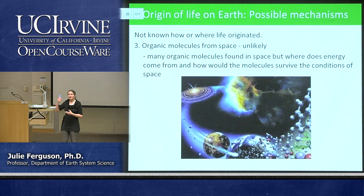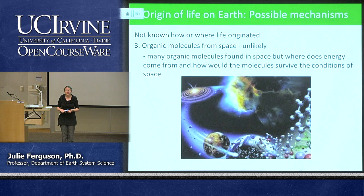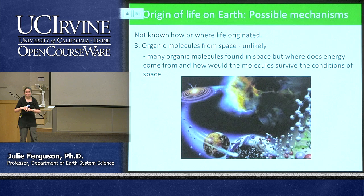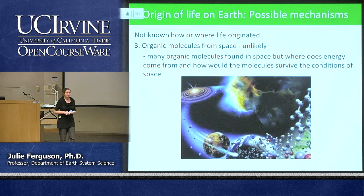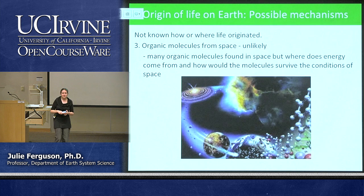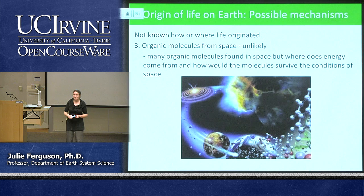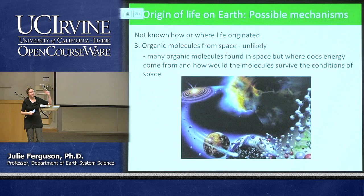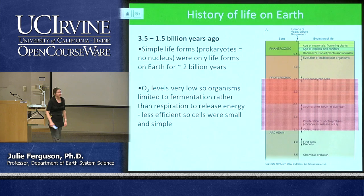The last idea is a bit out there — panspermia. When we look at gas clouds in space, we can see quite complicated organic molecules out there, so the idea is that life is seeded to different planets from space. But there are real issues: complex organic molecules can be broken down by solar radiation in space, and biomolecules would need to survive the intense heat of entering Earth's atmosphere. This one is not a strong contender, but it's still an open idea with interesting research being done.